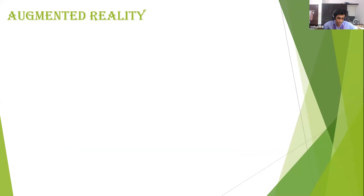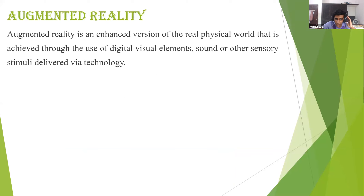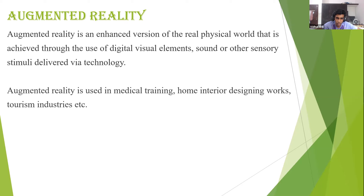Augmented reality is an enhanced version of the real physical world achieved through the use of digital visual elements, sound, or other sensory stimuli delivered via technology. For example, if you want to place furniture in a room, you can use a smartphone or tablet app to find the perfect position for it. Augmented reality is used in medical training, home interior designing, and tourism industries.